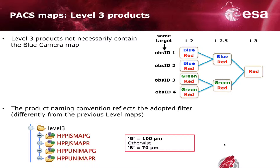An important highlight for Level 3 products: they do not necessarily contain the Blue Camera map. For example, if four observations of the same target were acquired in the blue filter and two others in the green filter, two Level 2.5 products are generated, but the Level 3 product will be generated only for the Red Camera, since the blue and green filters cannot be combined. So if you look at the Level 3 and don't find the blue map, check the Level 2.5 — that filter will surely be available there. Also, at Level 3 the naming convention reflects the adopted filter: the letter G indicates the 100-micron filter, while the letter B indicates the 70-micron filter.